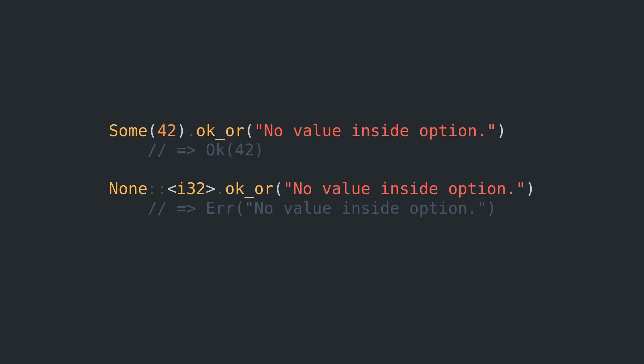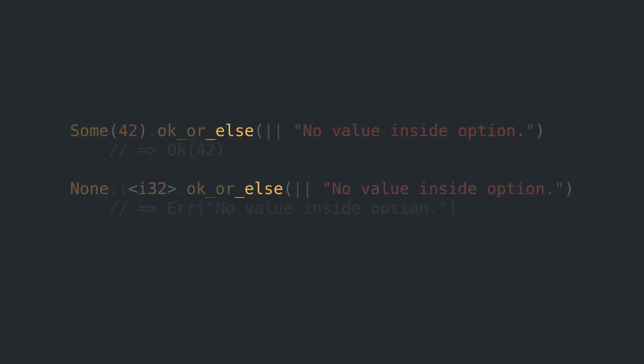And in case you want more fancy pipe characters in your code, because your salary is directly coupled to the amount of closures you commit to production, ok_or_else lets you provide a function that generates your Error content.